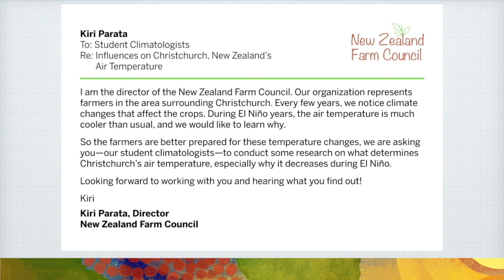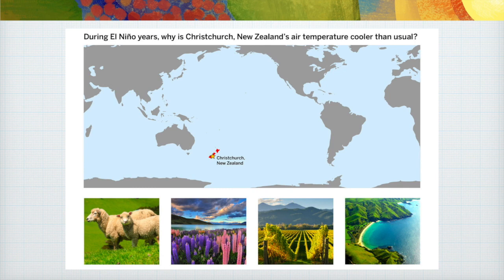The New Zealand Farm Council is not a real organization, but the data we're looking at is actually very accurate, especially since we have actually just exited an El Niño very recently. So a lot of this data is coming from the last event of El Niño. During El Niño years, why is Christchurch, New Zealand's air temperature cooler than usual? Remember, in El Niño, some areas get cooler, some areas get drier, some areas get warmer or colder, have more rain or less rain — it causes impact and changes to these environments, and they're pretty dramatic.